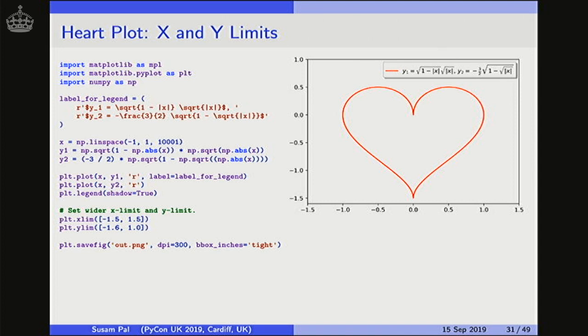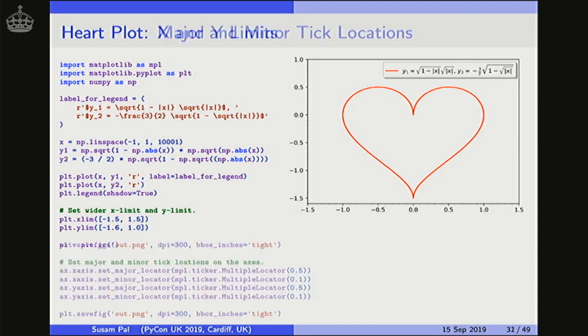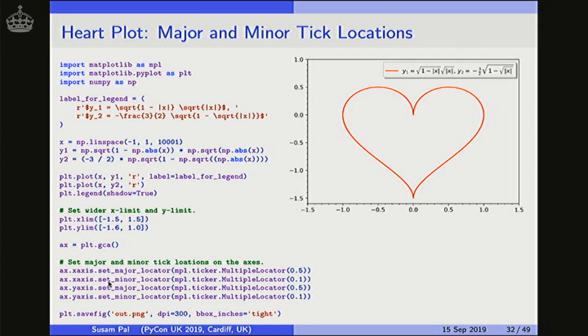So when I was doing this six years ago, the look and feel that I was going for was the graph paper look and feel. The kind of graph paper that we used to use in our high school days with the green color grid. To get that look and feel we need to plot a grid on this plot. And to plot a grid we need to define the major tick locations and the minor tick locations. So these five statements define the major tick and minor tick locations. This GCA call means get current axis.